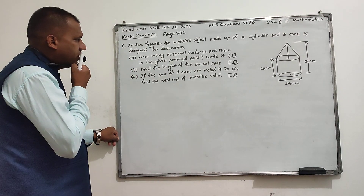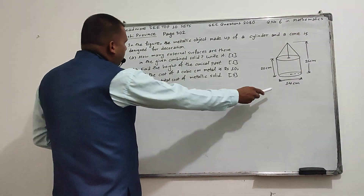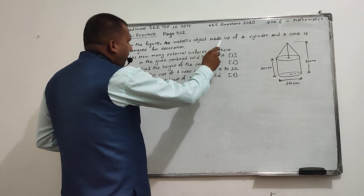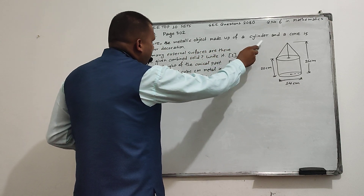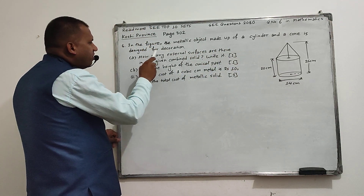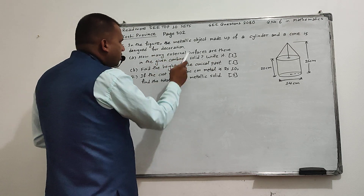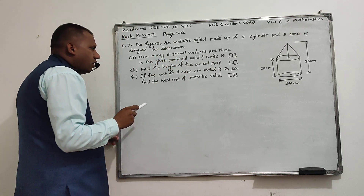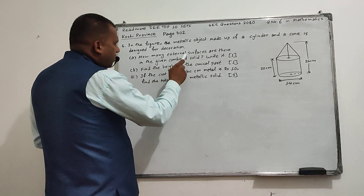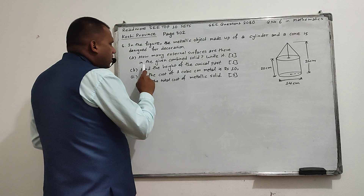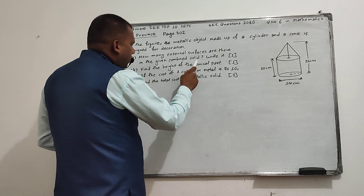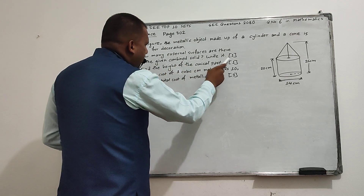The question is: in the given figure, a metallic object made of a cylinder and a cone is designed for decoration. Part A asks how many external surfaces are there in the given combined solid. Write it.